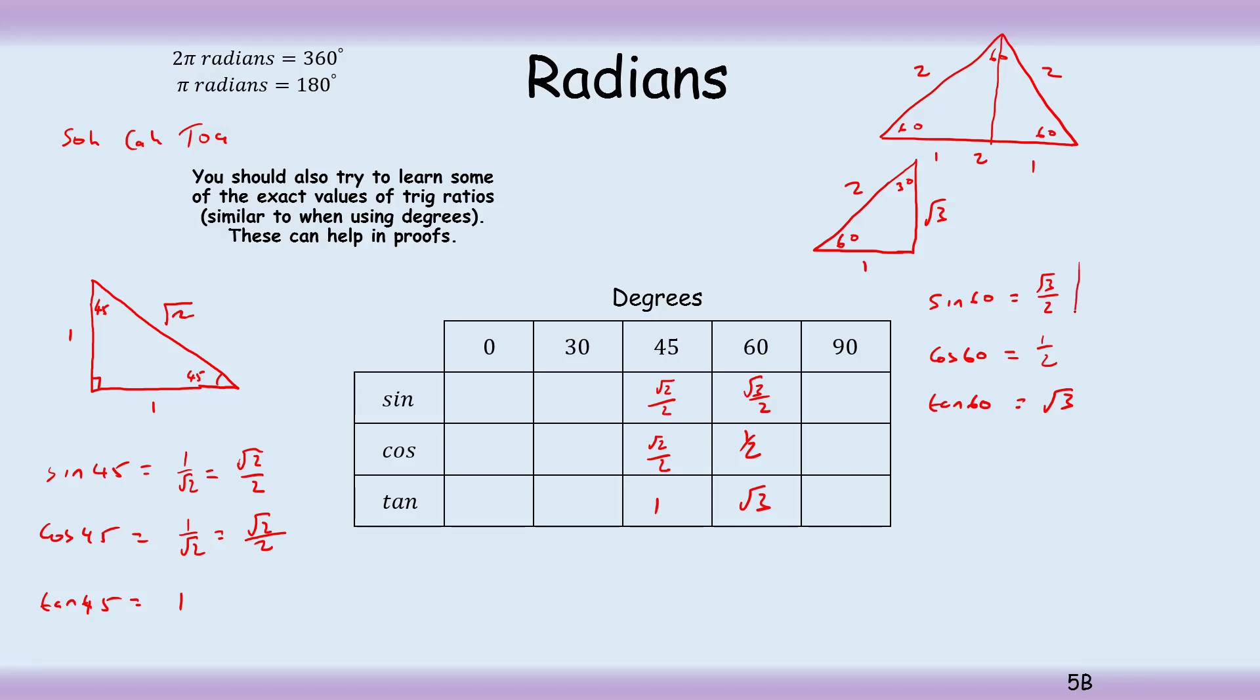From that same triangle, we can do 30 degrees. So sine of 30 is equal to sine of 30 is going to be opposite over hypotenuse, a half. Cos of 30 is adjacent over hypotenuse, root 3 over 2. And tan of 30 is equal to tan of 30 is going to be opposite over adjacent, 1 over root 3.